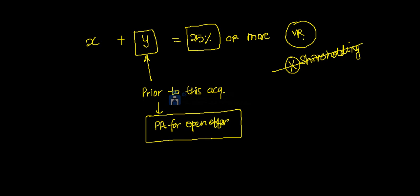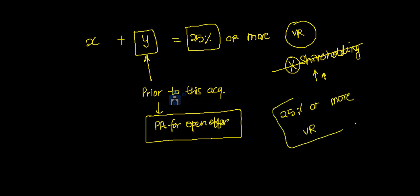Humne pichle lecture mein dekha tha ki shareholding aur voting right parallel nahi chaltein — kai baar shareholding kuch zyada percentage se badhta hai as compared to voting right, kai baar 0 voting right hota hai but shareholding badh jaata hai. So please dhyan rakhna: the trigger event is 25% or more voting rights in the target company in total.